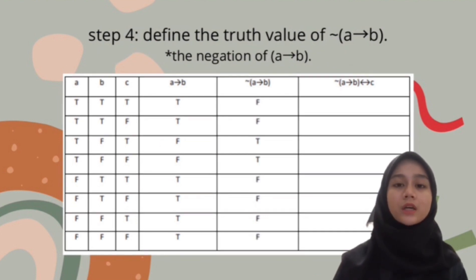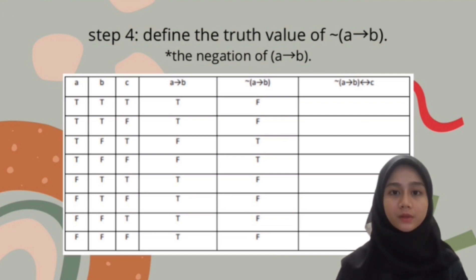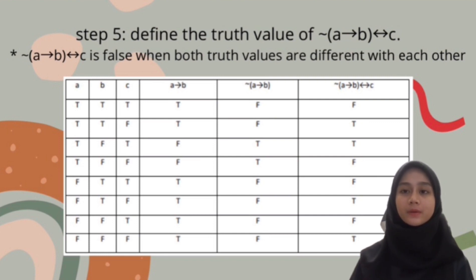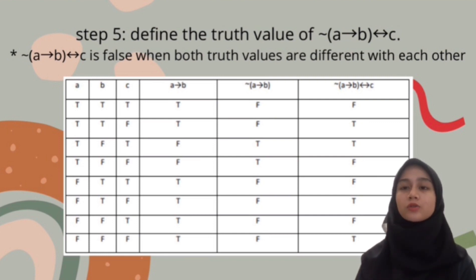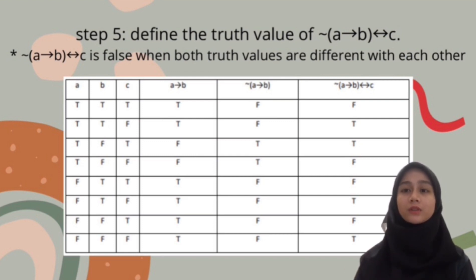The next step is to find the truth value for the negation of A → B. In this step, all the truth values are the opposite of those for A → B. For the last step, we define the truth value for ¬(A → B) ↔ C. The truth value will be true if the conclusion and hypothesis have the same truth value. We're done for example one.